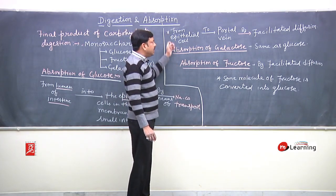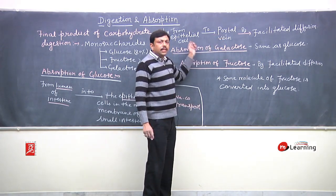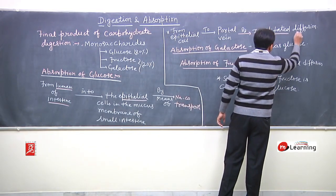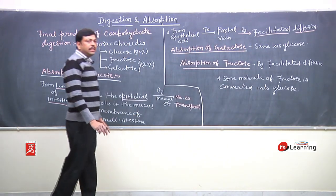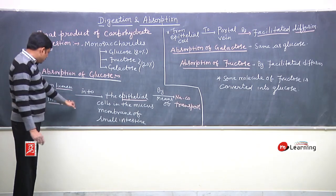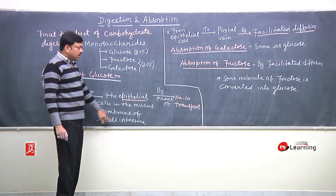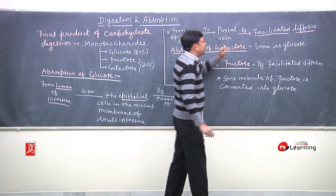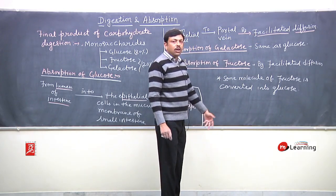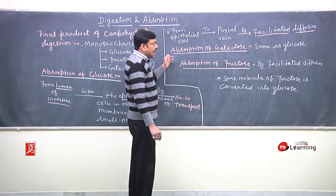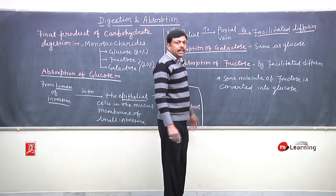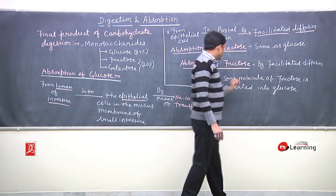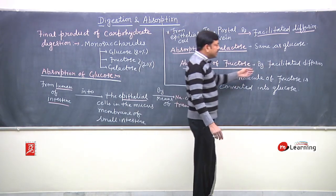Then, from the epithelial cells, glucose goes to the portal vein by means of facilitated diffusion. The absorption of galactose is by the same mechanism as glucose — by sodium co-transport. The absorption of fructose is by facilitated diffusion.